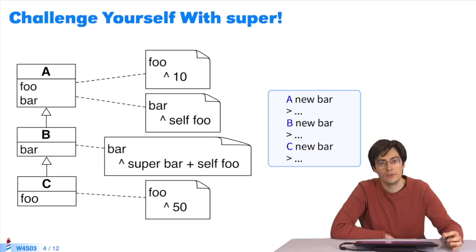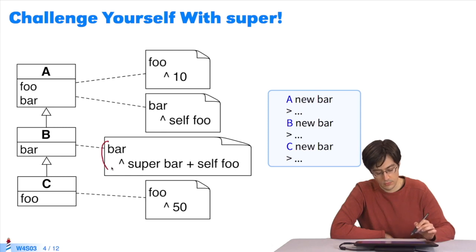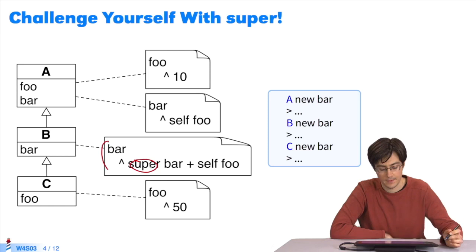The following principle is the same in both Pharo and Java. The example you see here is similar to the ones we saw in earlier sequences. Super is used in one method.